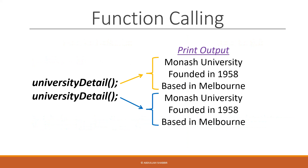And now if you want to change something about the university details, like adding more information, we can change it inside our function definition. And once we run this code again, the output will be changed as well.